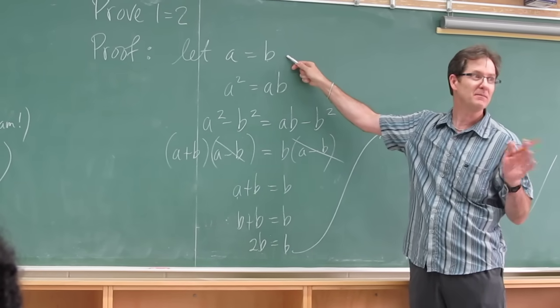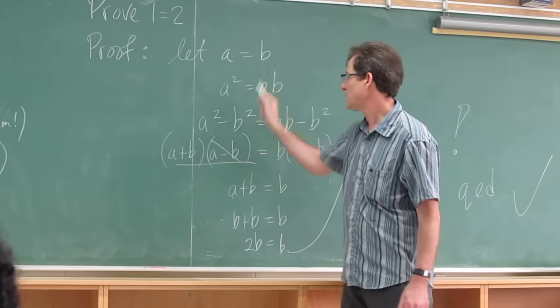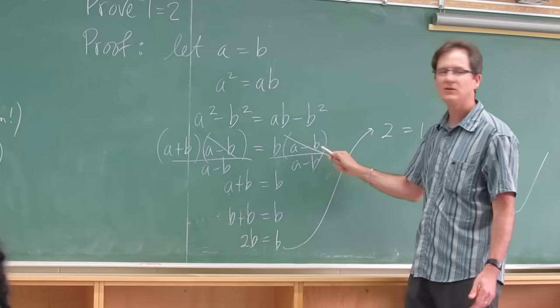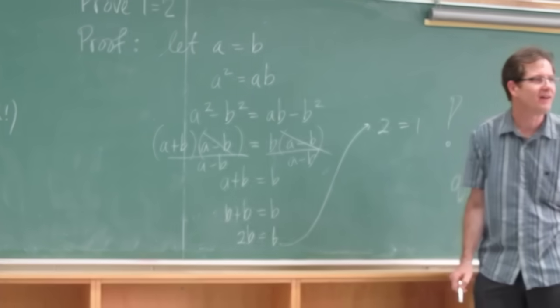They can't be the same number. Because if they're the same number, well, they can be the same number. But then you can't divide by a minus b. That's what I'm really doing when I cancel. Because a minus b equals zero.